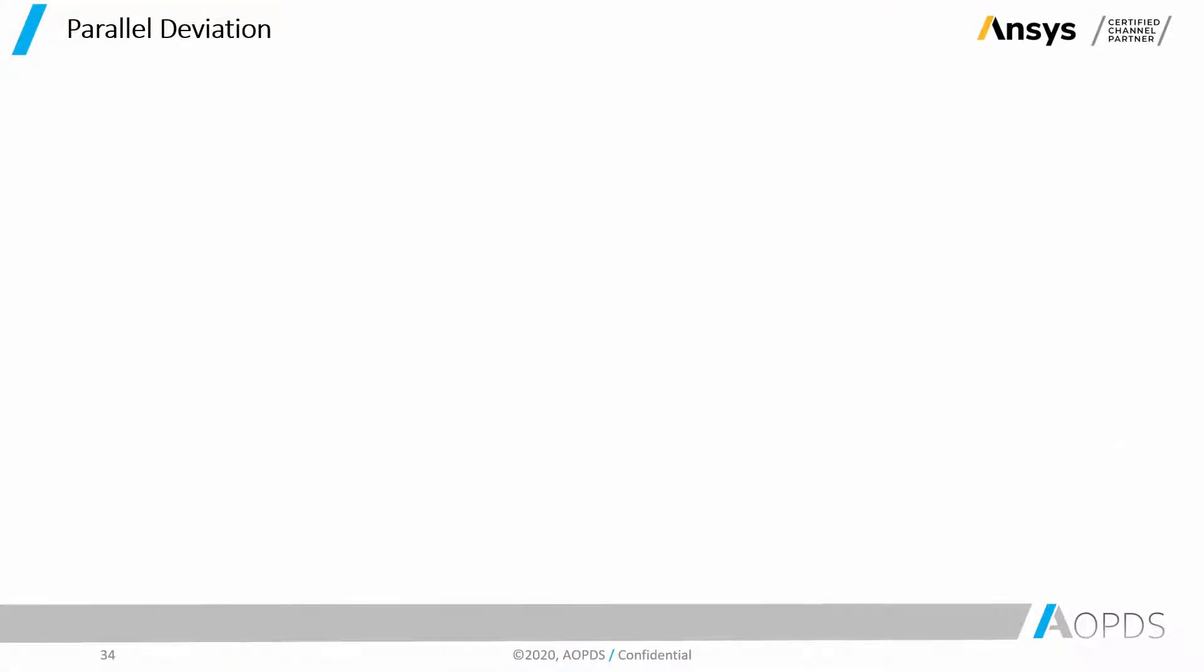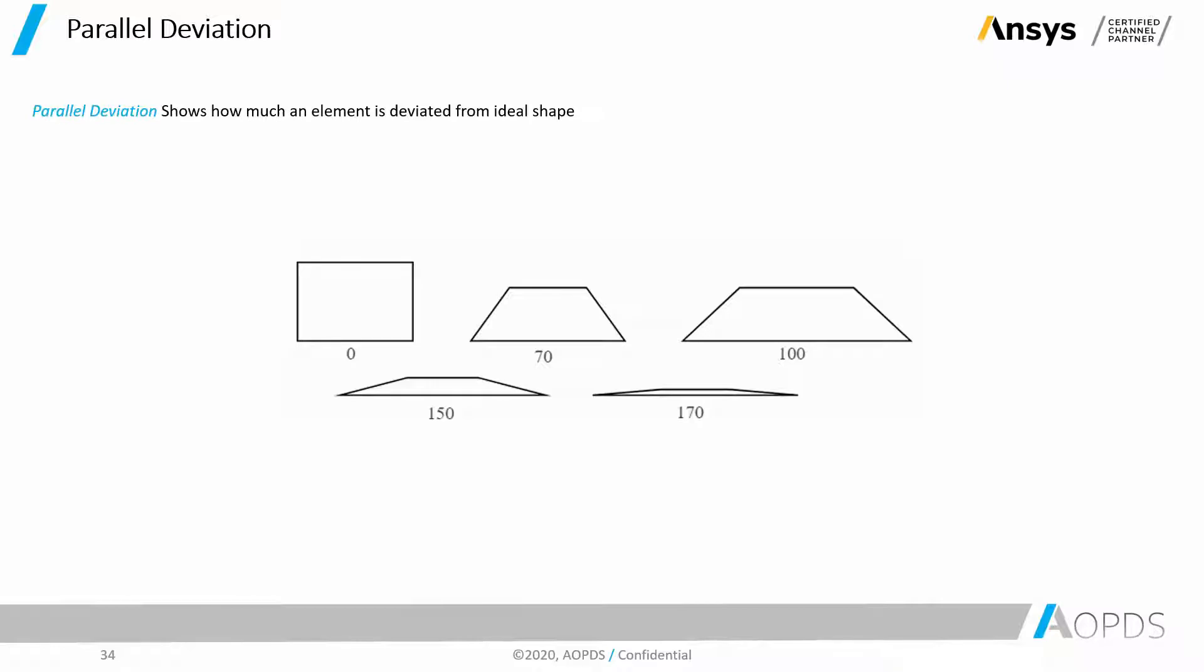First, let's see what parallel deviation represents. Parallel deviation shows how much an element is deviated from ideal shape. It's pretty simple.